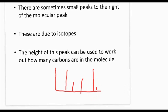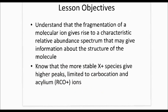We're at the end of the lesson. To recap the objectives: you should understand that the fragmentation of a molecular ion gives rise to a characteristic relative abundance spectrum that may give information about the structure of the molecule. You should also know that the more stable X-plus species give higher peaks, limited to carbocations and acylium ions. If you can't do these, go back and check your textbook or watch the video again.